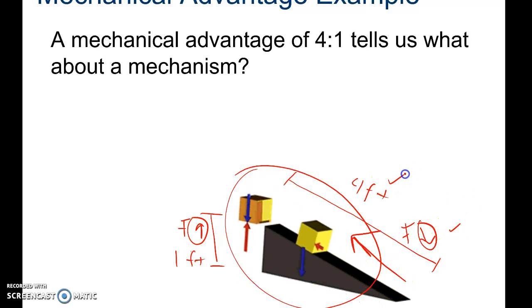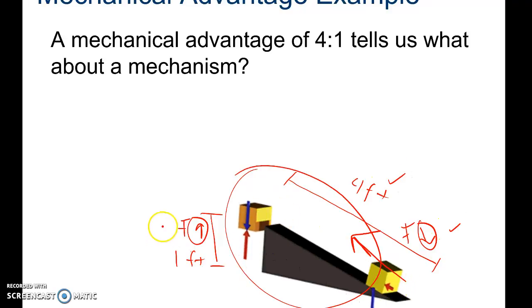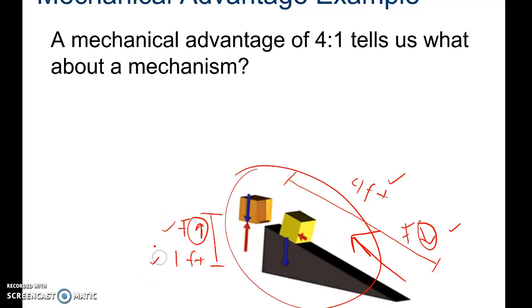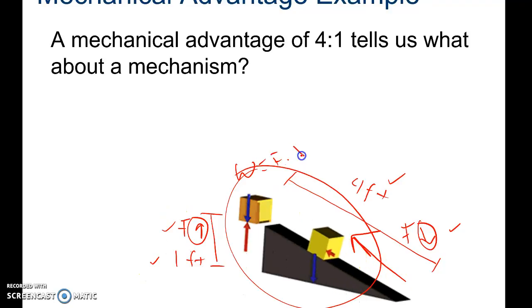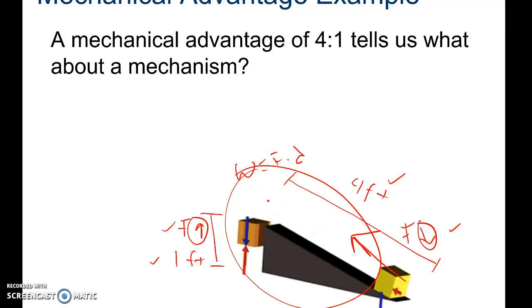So the force has gone down but the distance has increased. Here, the force has gone up but the distance has decreased. But the work, which is defined as force times distance, will be the same in both cases.